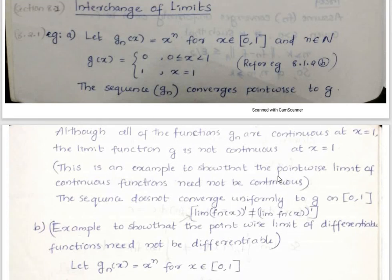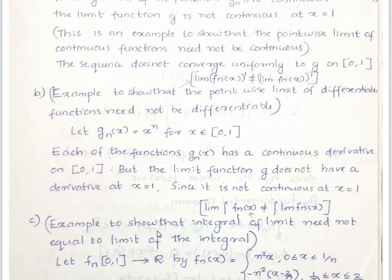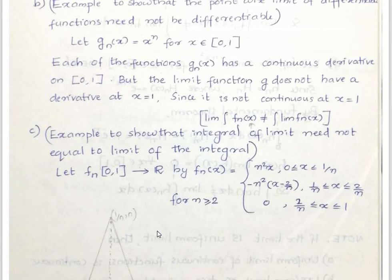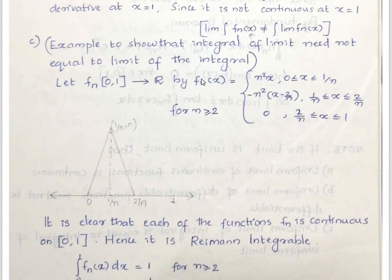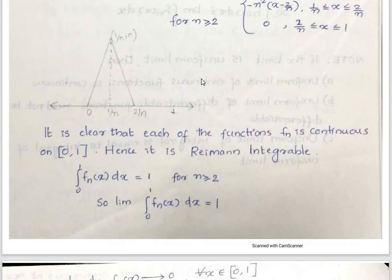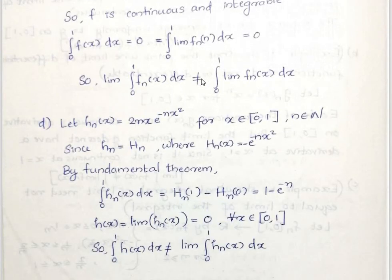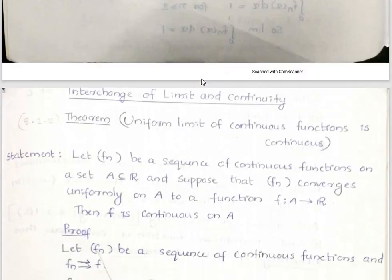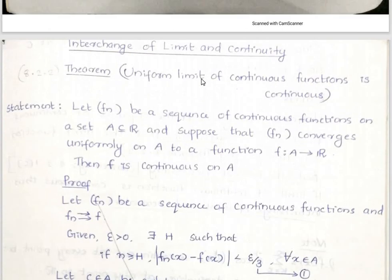Consider a continuous function and its point-wise limit. A continuous function's point-wise limit is not necessarily continuous. Similarly, the point-wise limit of differentiable functions need not be differentiable, and the integral of the limit need not equal the limit of the integrals. The theorem we address is the interchange of limit and continuity: the uniform limit of continuous functions is continuous.